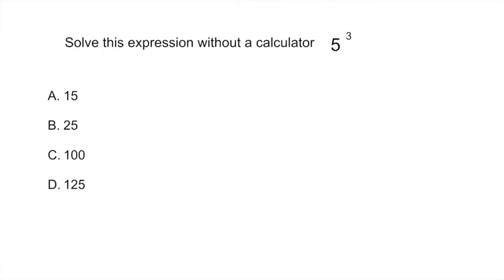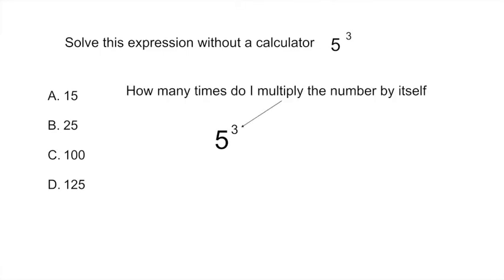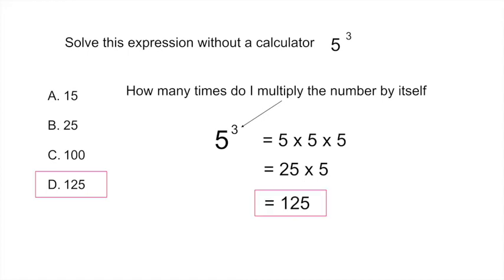First, let's remind ourselves what that exponent means. That number, that exponent, is telling you how many times you have to multiply the big number by itself. Here they're telling you 5 to the power of 3, which means 5 has to be multiplied by itself 3 times: 5 times 5 times 5. So 5 times 5 is 25, times 5 would be 125. Your answer would be D.